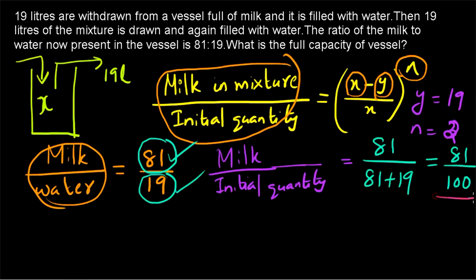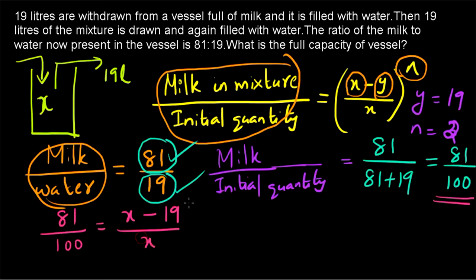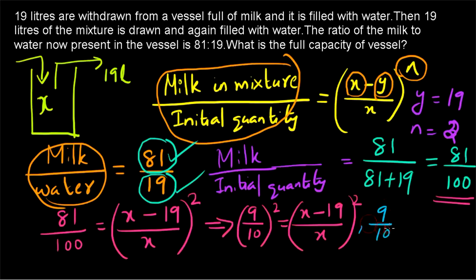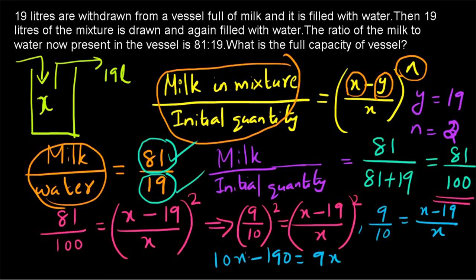Now we substitute into the formula: 81 by 100 equals (x minus 90) by x, the whole squared (n equals 2). We can write 81 by 100 as (9 by 10) squared. So (9 by 10) squared equals ((x minus 90) by x) squared, giving us 9 by 10 equals (x minus 90) by x. This gives 10x minus 900 equals 9x, so x equals 190 liters. Therefore 190 liters is the full capacity of the vessel.